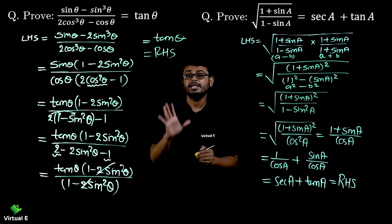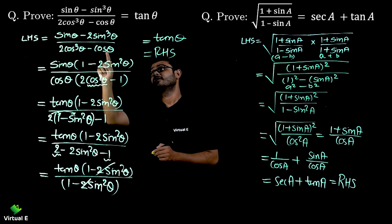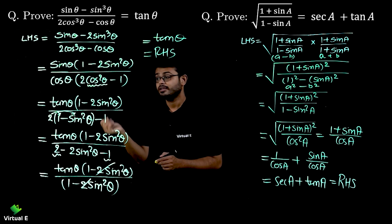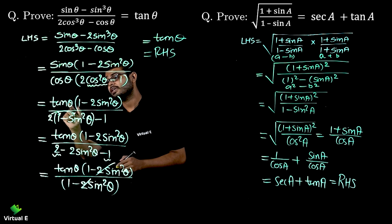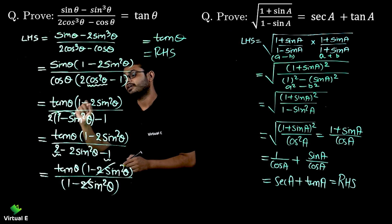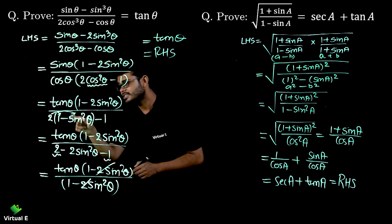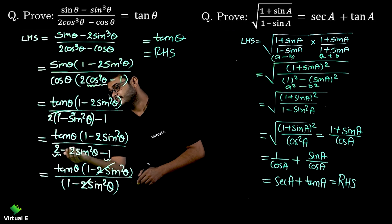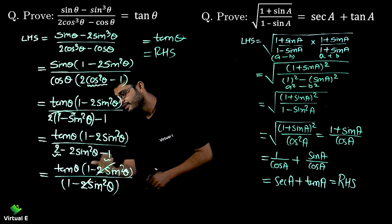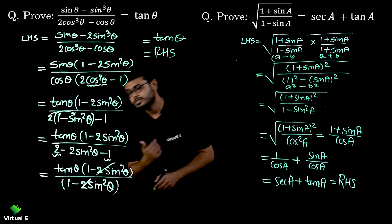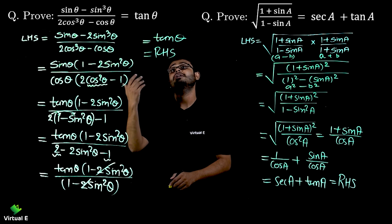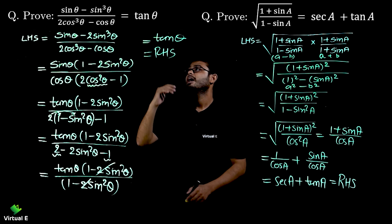To recap: for (sinθ - 2sin³θ)/(2cos³θ - cosθ), we cannot use the a³ - b³ identity because only one term is cubed. So we took sinθ common from numerator and cosθ common from denominator. Sinθ/cosθ gives tanθ. Then we replaced cos²θ with (1 - sin²θ), opened the bracket, simplified: 2 - 1 = 1 gives (1 - 2sin²θ) in both numerator and denominator. These cancel, leaving tanθ as our RHS.